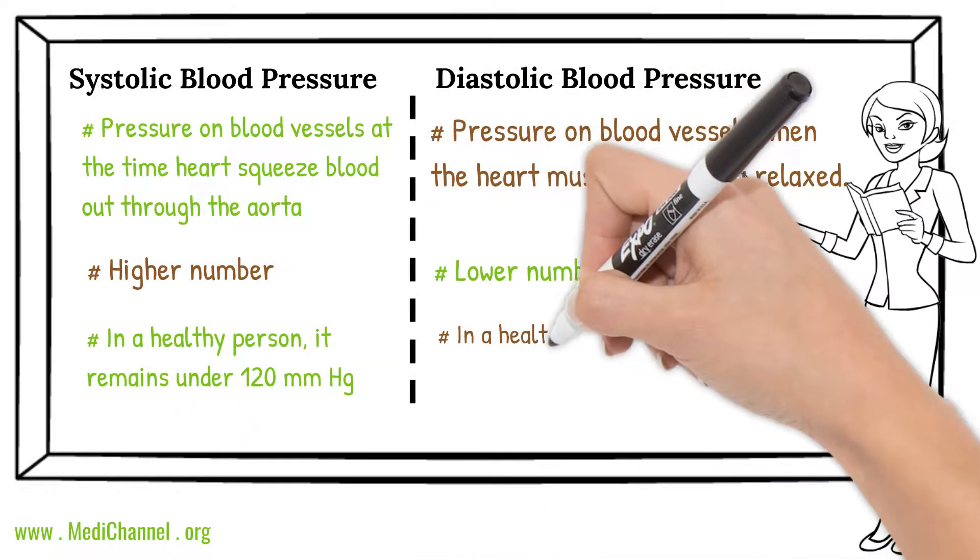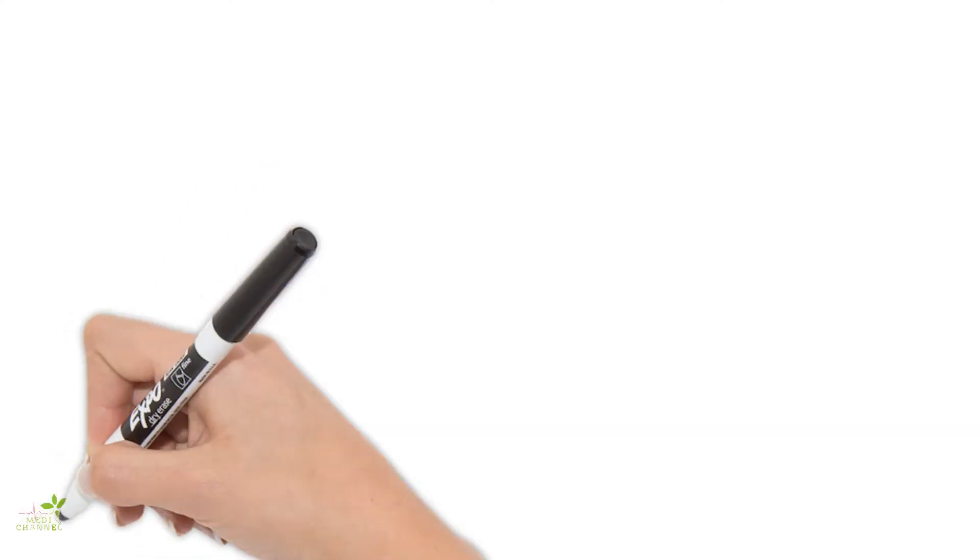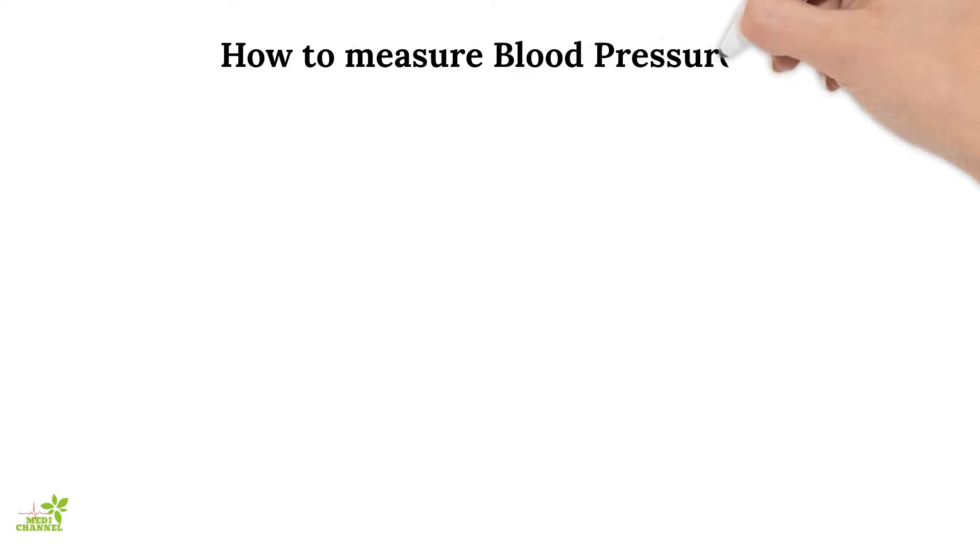The medical practice uses the term hypertension for high blood pressure. How to measure blood pressure? The blood pressure meter or monitor, medically known as sphygmomanometer, is the instrument used for measuring blood pressure.